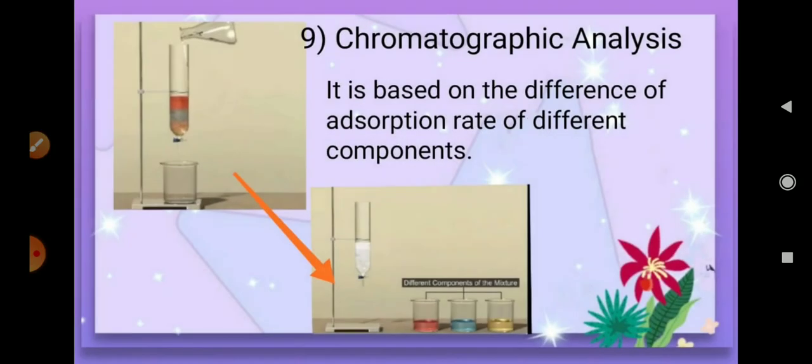In chromatographic analysis — a technique we have learned about in organic chemistry — a mixture of substances can be separated using this process. As shown in the figure, a mixture of three substances represented in different colors can be separated into three parts individually during the chromatographic process.